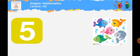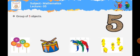اب دیکھیں اس page پہ ہم نے search کرنا ہے group of five objects — وہ group جس میں five objects ہمیں ملیں۔ Group of five objects تو first group میں ہمیں کیا دیا گیا ہے؟